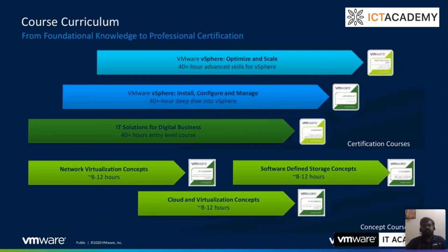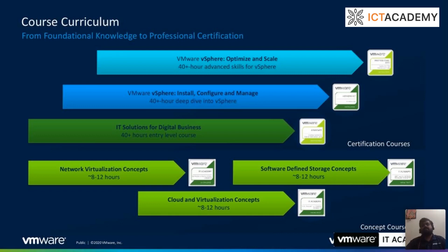We charge about 25,000 rupees per college — not per student — to join the program. The curriculum includes three online courses: network virtualization concepts, software-defined storage concepts, and cloud virtualization concepts. At the end of each course, students get a digital certificate or digital badge. There are also three long-term courses of 40 or 60 hours duration, each helping you achieve a VCP certification.